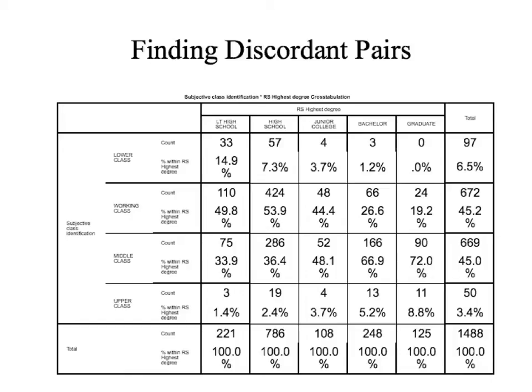Welcome back. In this section on calculating gamma by hand, we are going to talk about finding discordant pairs. In the last segment we talked about finding concordant pairs — pairs where they're higher on both variables. Now we're going to look at pairs that are higher on one variable but lower on the other.